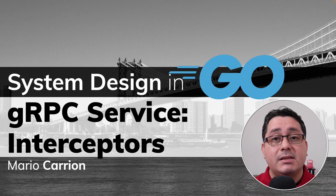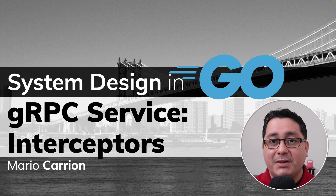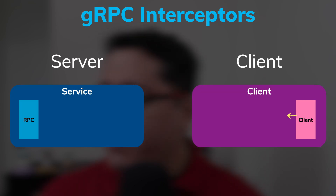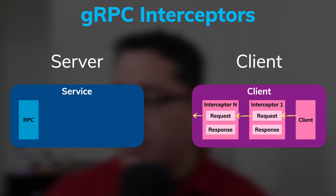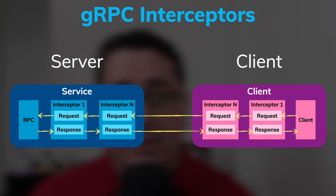Hello, my name is Mario. Welcome to another System Designing Go video. In today's episode I'm sharing how to implement gRPC interceptors, specifically for both the client and server implementations. Interceptors intercept the execution of each RPC call. Users can use interceptors for logging, authentication, authorization, metrics collection, and many other functionalities that can be shared across RPCs.